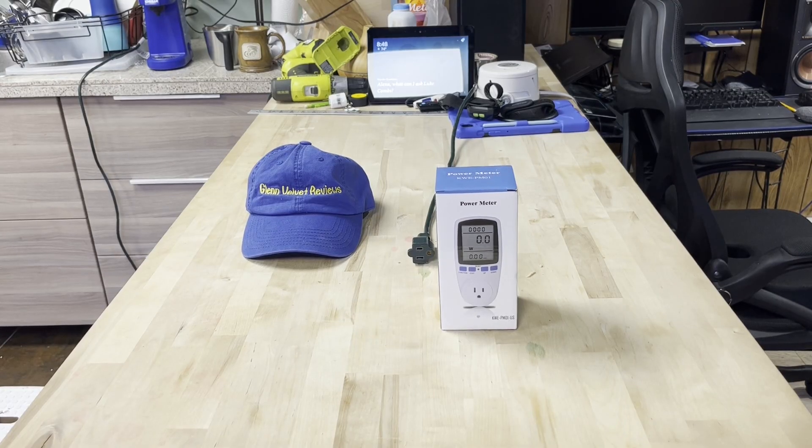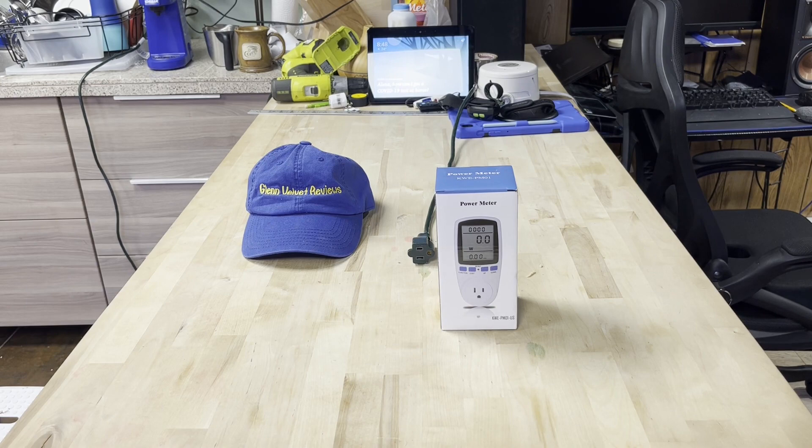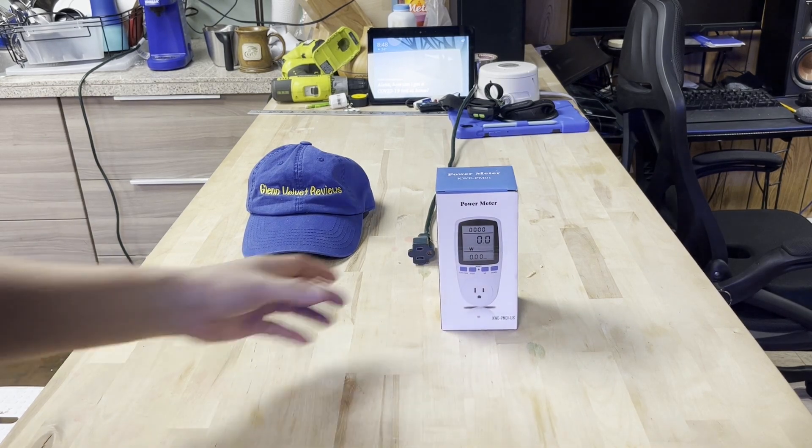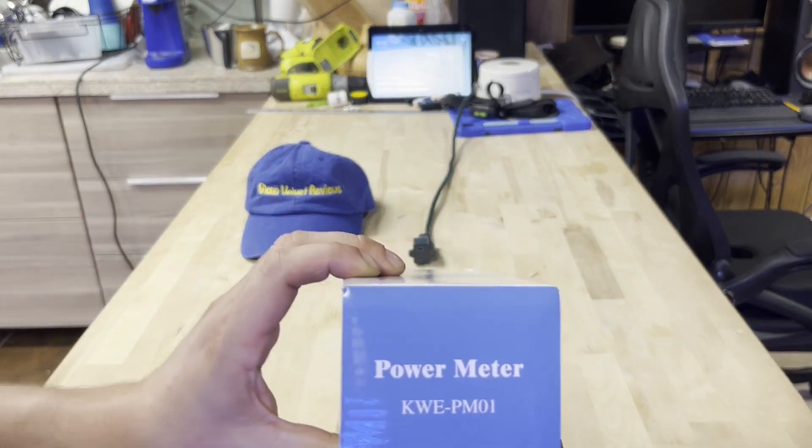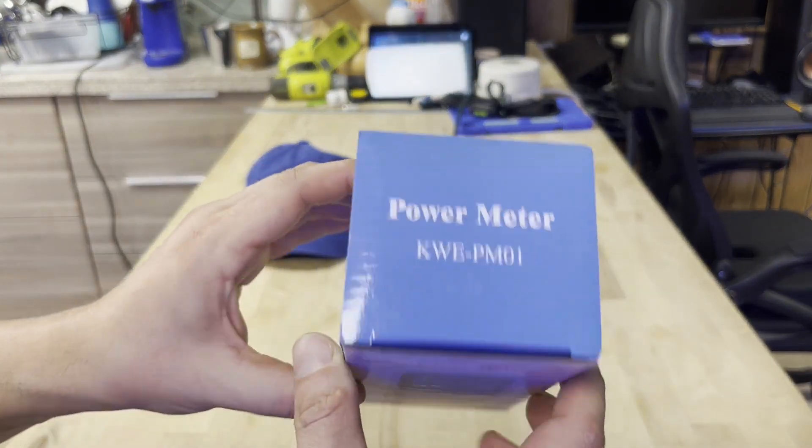Hello everyone, we are back with Glenn Velvet Reviews today. I got this power meter - I don't know the brand, it says KWE P MDI US on the bottom. We'll bring the box up close so you guys can take a look. I'm not sure about the brand, I will post it as soon as I find out when I got it off Amazon.